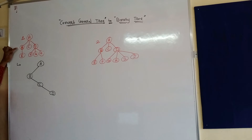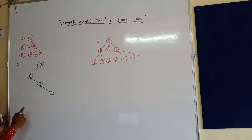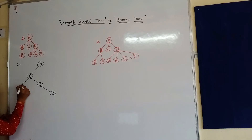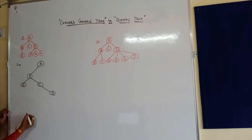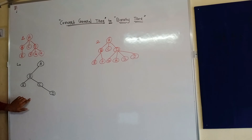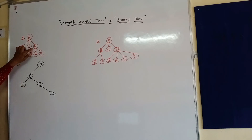Now we come to B node. B node has only one child, which is E, so E will be the left node of B. Next, C node has no child, so leave it as it is.